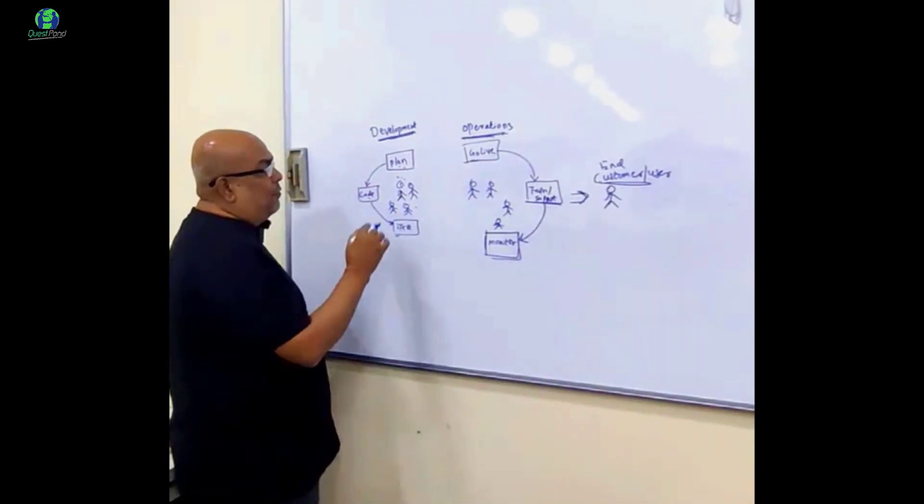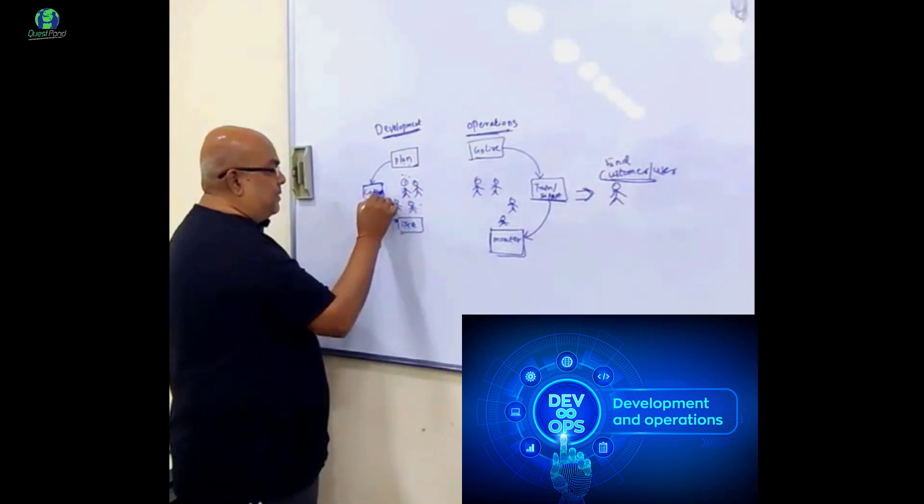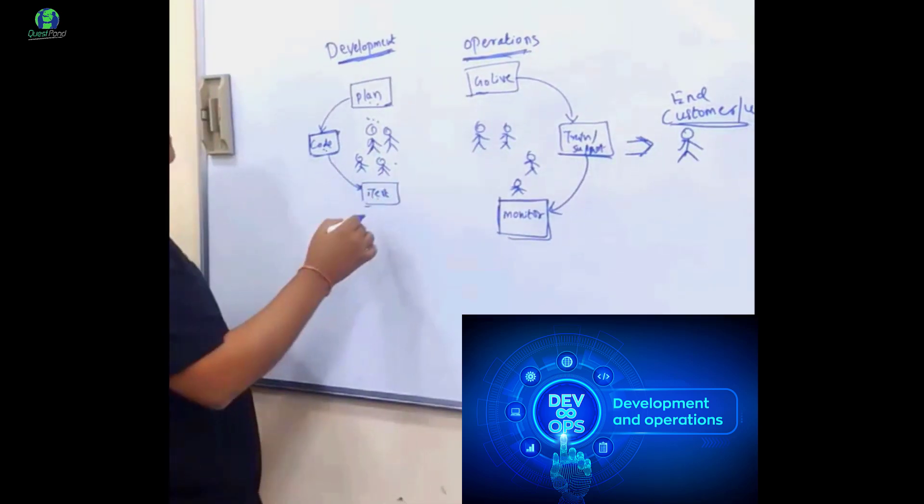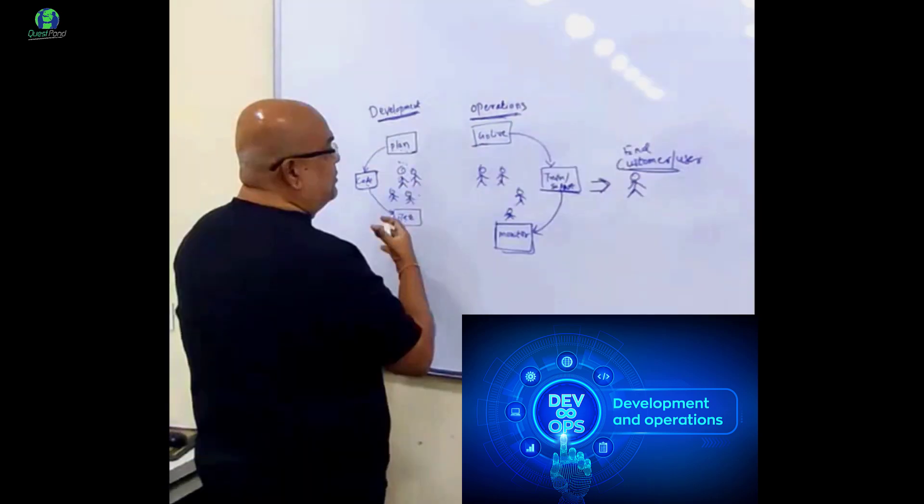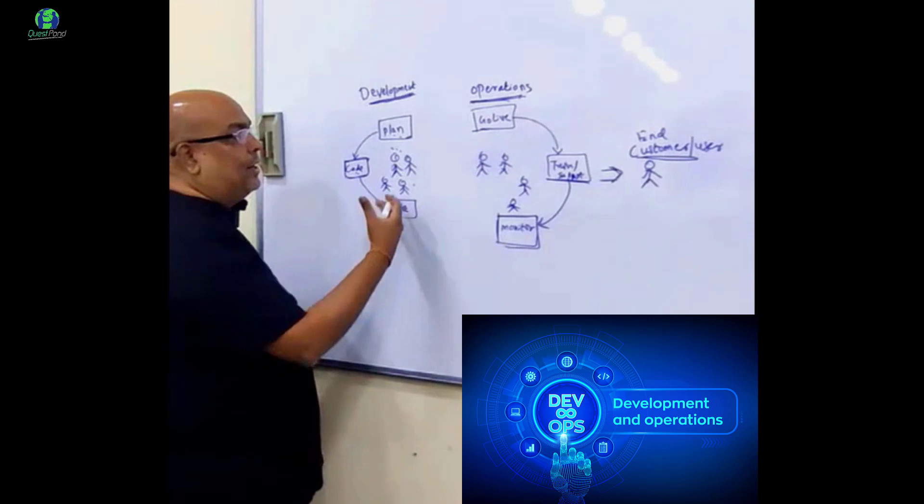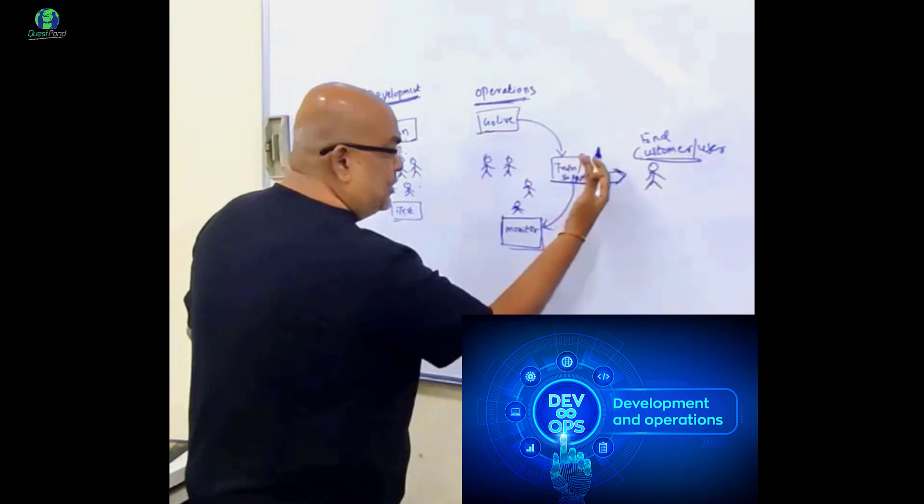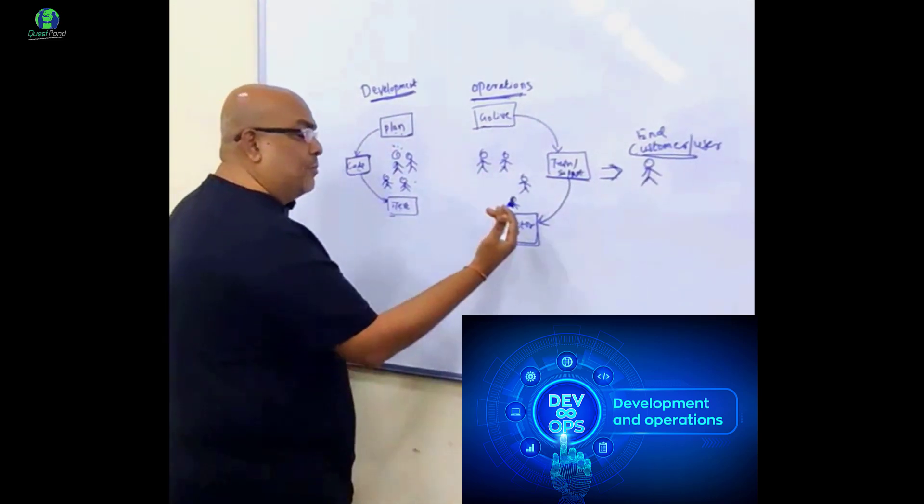So what does the development team do? The development team actually plans, executes, tests, does designing - there are many phases inside this. And then after that, the operation team takes that build, the final tested build and goes live. They train and support the end customer, monitor and so on.